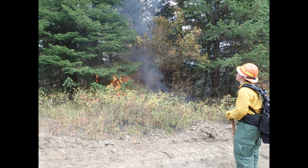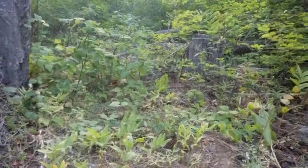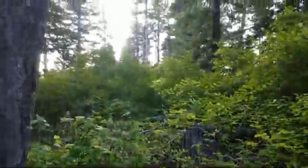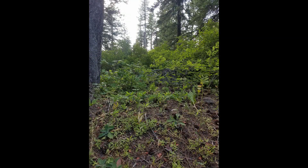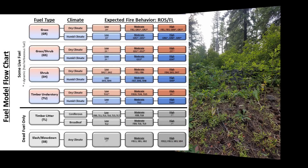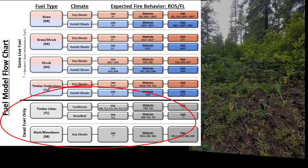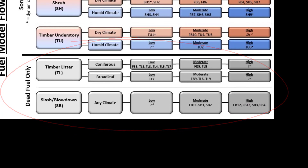Now let's look at an example of a fuel model that might not be what you expect. This is a timber stand in northern Idaho that has a strong shrub component. It's early fall and the shrub leaves are still green. Based on past experience, we know that these shrubs are not available to burn until they start to turn color. Based on the picture, it'd be easy to select a shrub or timber understory fuel model—but let's work through the selection process. What's the primary fire carrier? There are some grass and some available forbs and shrubs, but for the most part the primary carrier is needle litter, which puts us into the dead fuels only category. There are some dead and down material, but not enough to be called slash, so we'll go with the timber litter category.